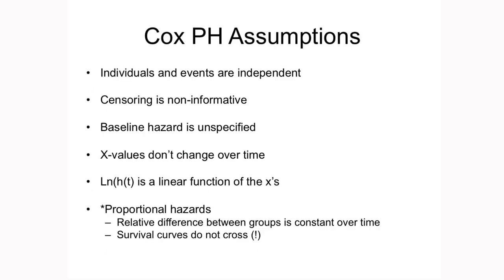Now let's turn to the Cox regression assumptions. Similar to previous regression models, the first assumption is that individuals are independent of one another, and also that events are independent — if one person experiences an event, that doesn't increase or decrease the likelihood of that person or others experiencing the event. The second assumption, unique to Cox proportional hazard regression, is that censoring is not informative — people who stayed in the study are no different from those who were lost to follow-up. If you have a small number lost to follow-up, it makes less of a difference.